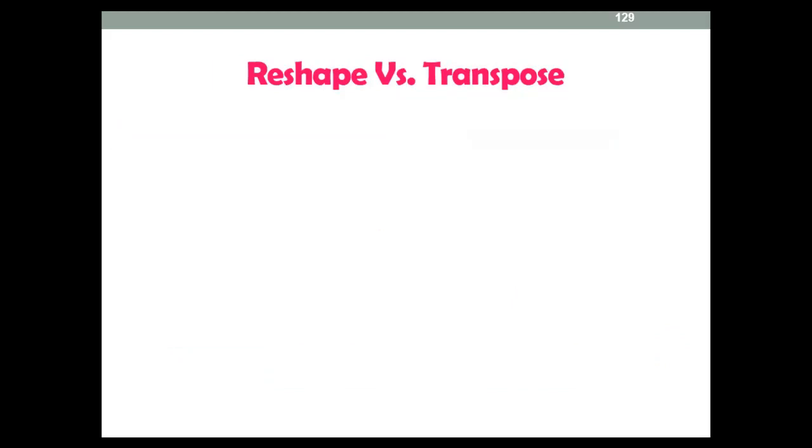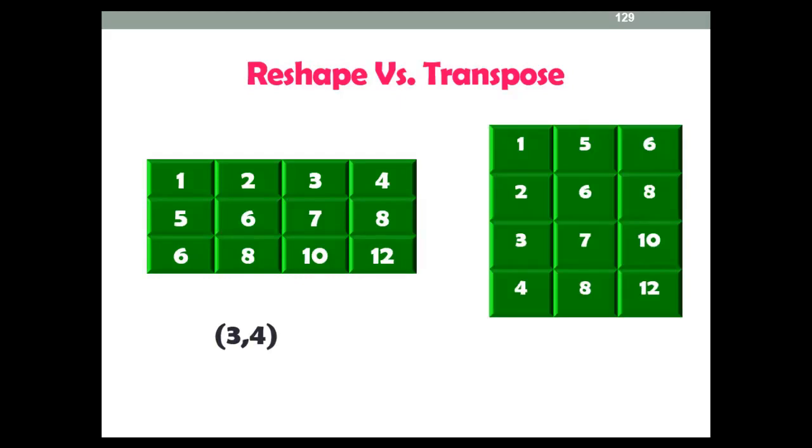Now let's discuss transpose. Transpose switches rows and columns, so it looks like this. 1 plus 5 equals 6, 2 plus 6 equals 8, 3 plus 7 equals 10, 4 plus 8 equals 12. This is the form we require and expect for machine learning algorithms.